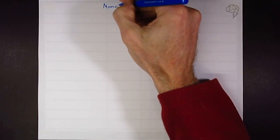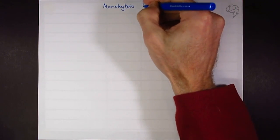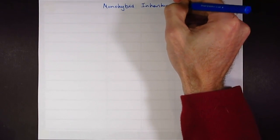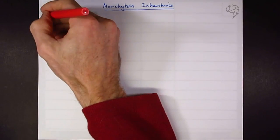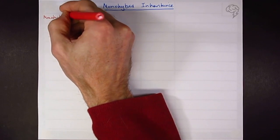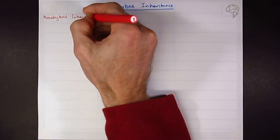Okay, so this is monohybrid inheritance. Let's start again with the definition. Monohybrid inheritance is the inheritance of a characteristic which is controlled by a single gene.